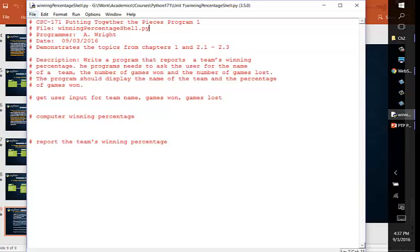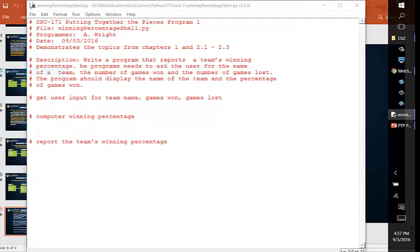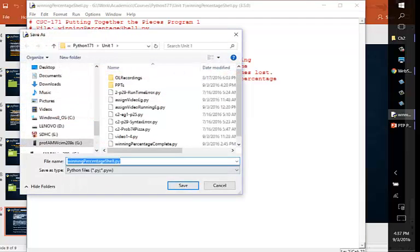Here is our starting shell. Let's do a save as right away, so if we need to come back to the starting shell, we can. So let's save as winning percentage and let's name it complete.